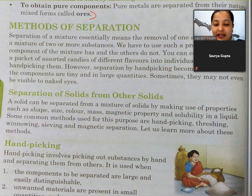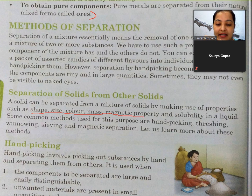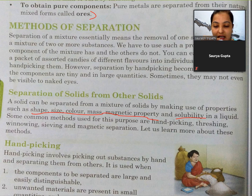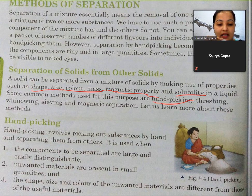Kuch aisa methods hote hain jisse kuch aisa solids hain jinko aasani se hum alag kar sakte hain - separate kar sakte hain unke size ke according, shape ke according, color ke according, mass ke according, magnetic property ke according, aur solubility ke according. Kuch alag-alag tarike hain jisse hum separate kar sakte hain. Pahela hai handpicking - haath se uthha karke cheezein alag karna. Threshing hota hai jisse ki bhoosi nikalna, jaise ki chawal mein ya rice mein ya aur grains mein alag alag tarike ki cheezein milti hain.